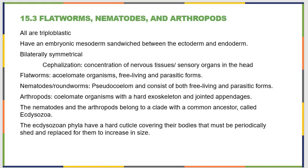The third section covers flatworms, nematodes, and arthropods. All of them are triploblastic, so they have three layers of tissues. They have an embryonic mesoderm sandwiched between the ectoderm — the outside — and the endoderm — the inside. They're bilaterally symmetrical and have cephalization: a concentration of nervous tissue and sensory organs at one end of the animal, which we call the head end.